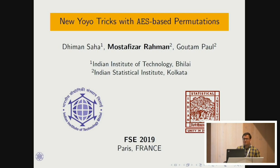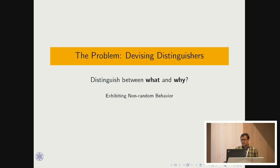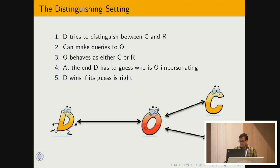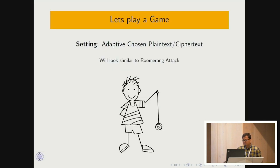What I will present today is joint work with Diman Sa and Gautam Paul. It's 'New Yoyo Tricks with AES-based Permutations.' In this work we have tried to devise distinguishers for AES-based permutations. We have chosen two AES-based permutations: AES in the non-key setting, and the AES-based permutation ASK. This is a typical distinguishing setting where distinguisher D tries to distinguish between a uniform random permutation and a given permutation.